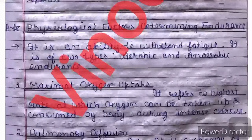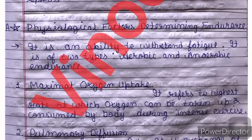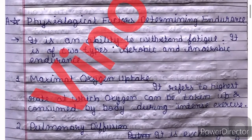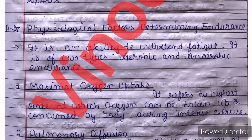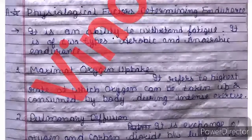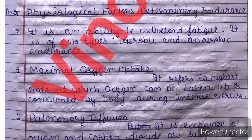Physiological factors determine endurance. So first of all, what do you mean by endurance? From 11th class, we have five components of physical fitness: strength, speed, flexibility, endurance, and coordinative abilities. These are five components. So first we are going to talk about endurance. Endurance means how much time you can perform without any fatigue. Its definition is: it is the ability to withstand fatigue.